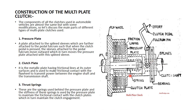Thrust spring: that spring is also known as the thrust spring. These are used behind the pressure plate. The stiffness of this spring is used by the pressure plate to maintain the frictional contact with the clutch plate, which in turn maintains the clutch engagement. If we release the force from the pedal, then that spring will compress, and the clutch plate and frictional lining will come into contact with each other.